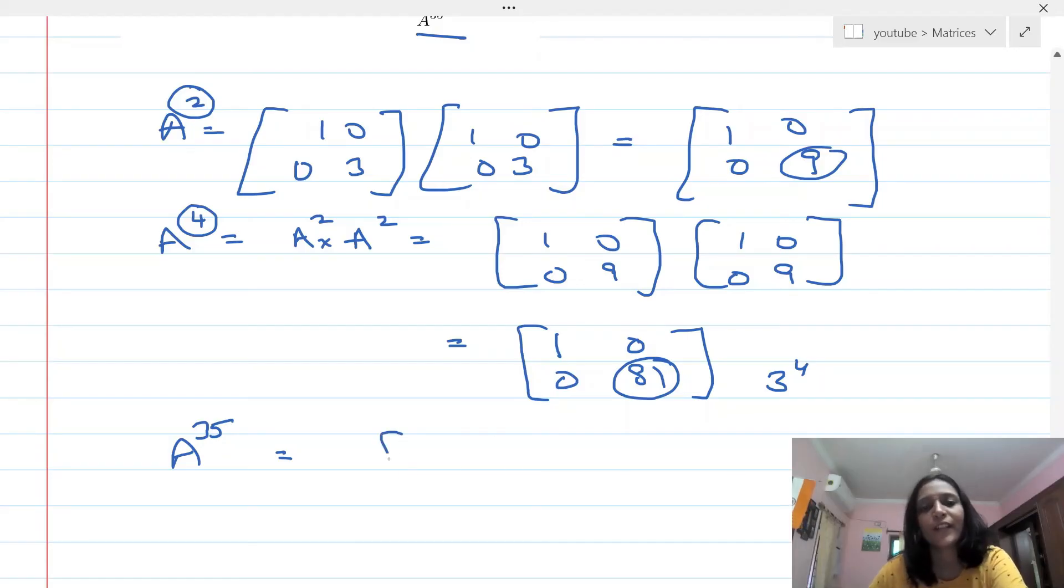All right, so that's right, the answer should be [1 0; 0 3^35], that should be your answer. Like this, we can find out the answers of any matrix to the power n by figuring out what the pattern is by first finding A squared, A to the power 4, and some or the other pattern will emerge.